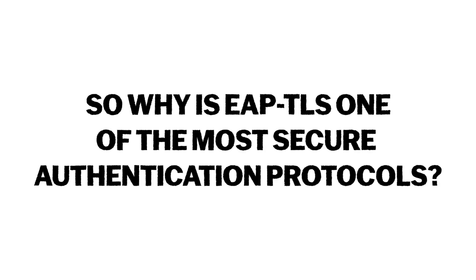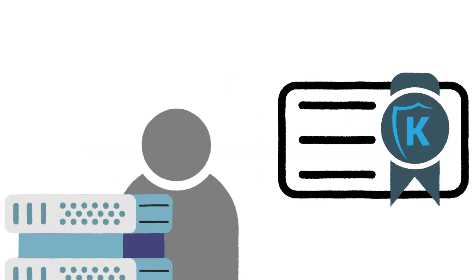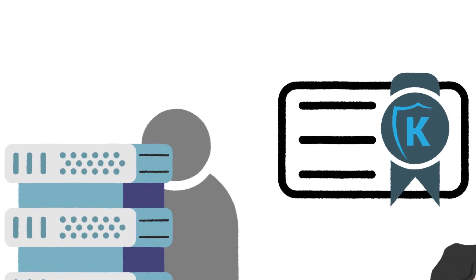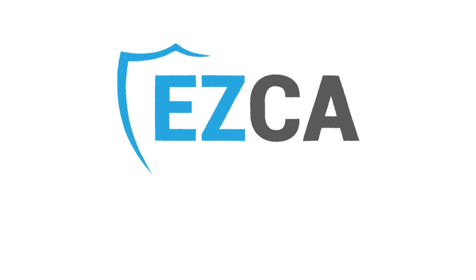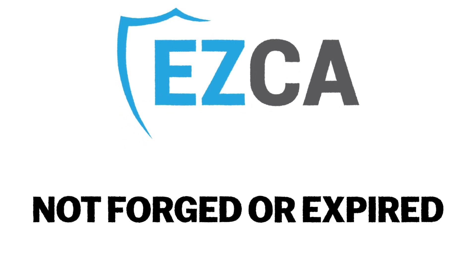So why is EAP-TLS one of the most secure authentication protocols? Three main reasons. First, mutual authentication: both the client and server are required to present certificates, ensuring that neither party can be impersonated by an attacker. Second, certificate validation: certificates are validated by trusted certificate authorities, ensuring that they are not forged or expired.